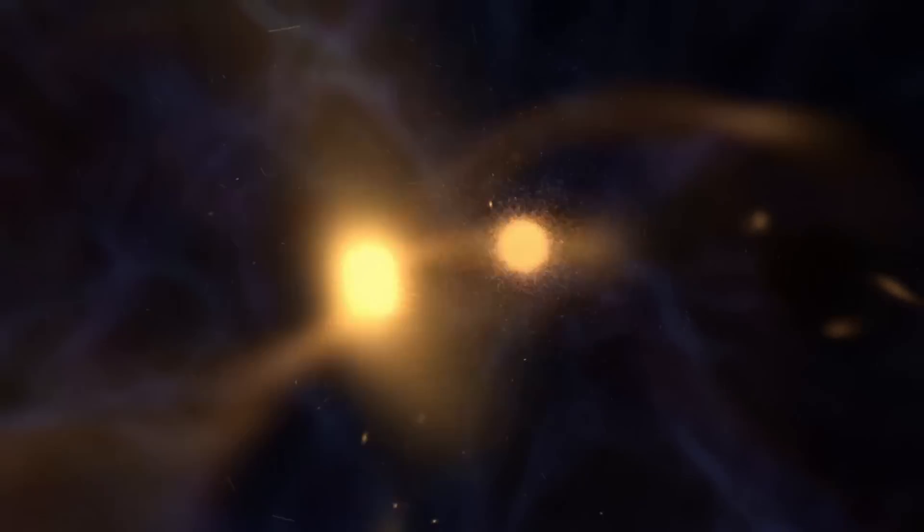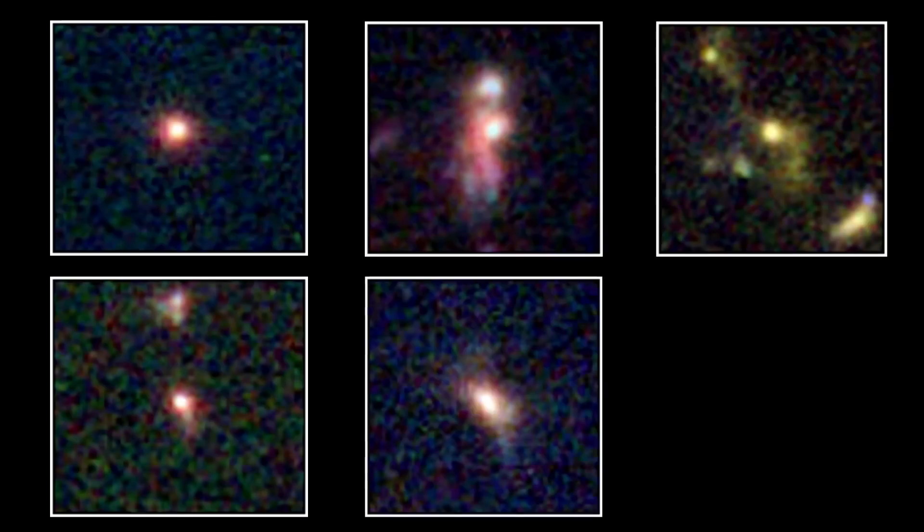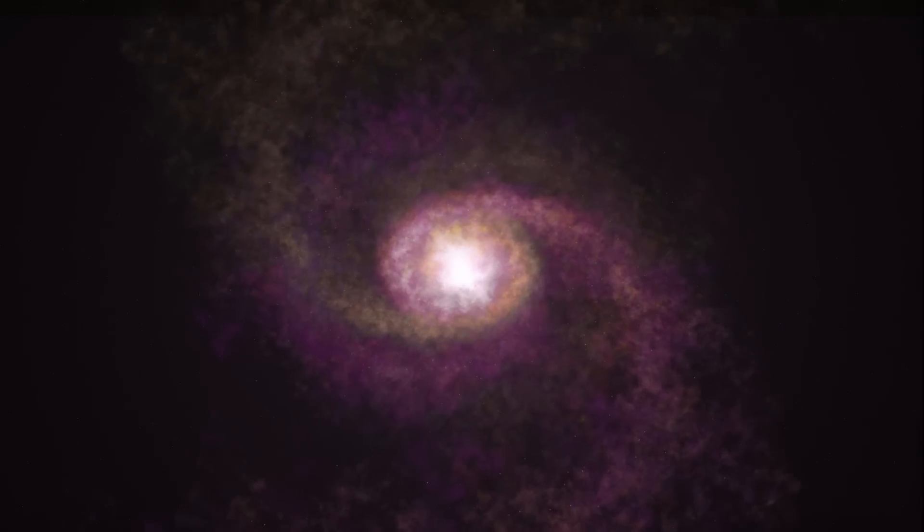The very early universe is supposed to be chaotic, so they weren't expecting a lot of these galaxies, but they found more of them than predicted. Not only that, these galaxies appear bigger and brighter than expected.